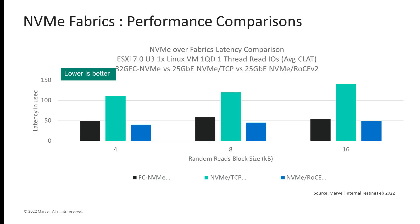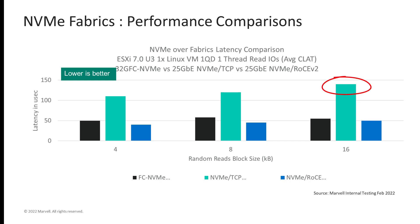If NVMe over fabrics is higher performance than SCSI-based fabrics, how do the different transports compare? NVMe over RoCE is the lowest latency option, with FC NVMe being very close. That's because both options are fully offloaded, meaning the adapters do all the IO processing and don't require host CPU access. NVMe over TCP, on the other hand, uses software initiators, so the host processor is involved in every IO transaction. This takes time, and the latency is much higher than with either NVMe over RoCE or FC NVMe.